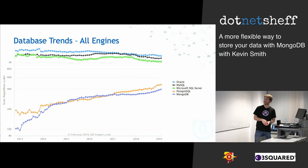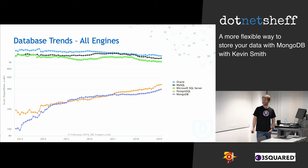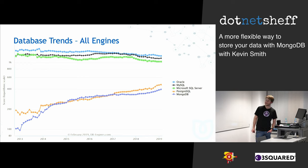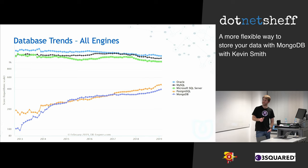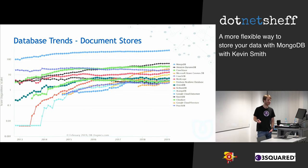These are database trends currently, up to this month. At the top we obviously have Oracle, MySQL, and Microsoft SQL Server as you'd expect. Right underneath them we've got PostgreSQL and MongoDB. So MongoDB is not that far behind compared to database technologies that have been around quite a while.